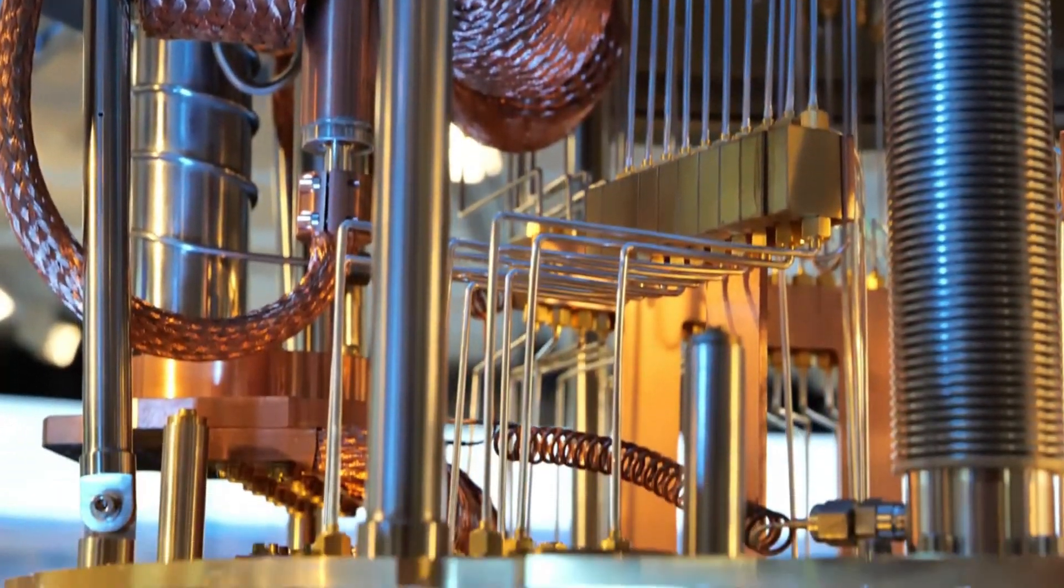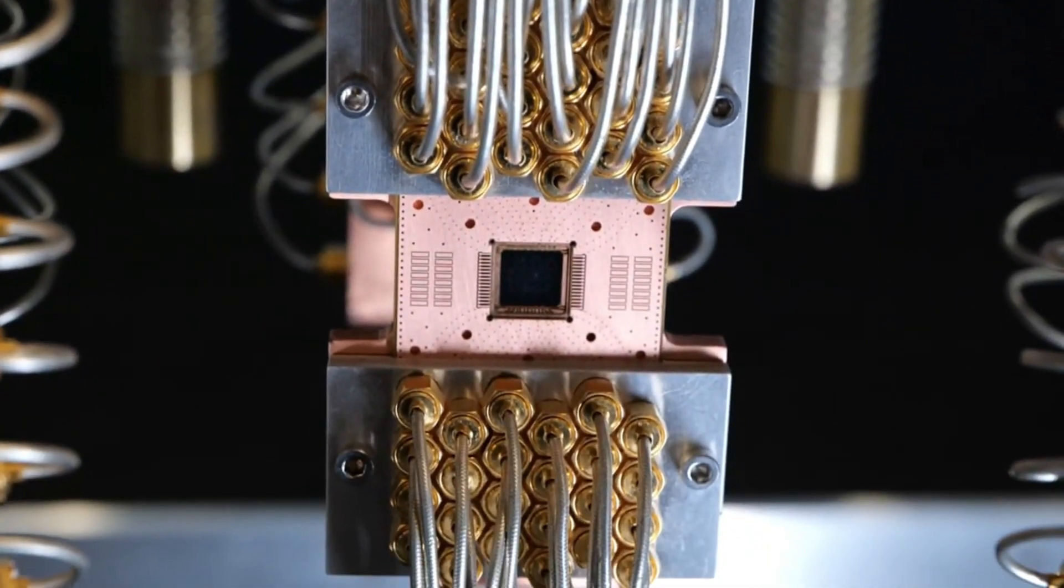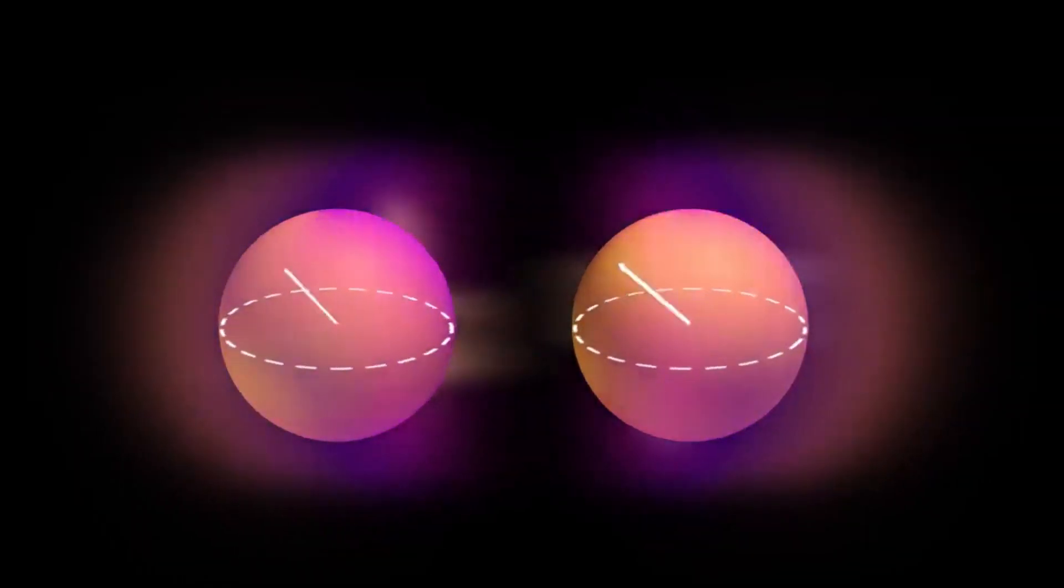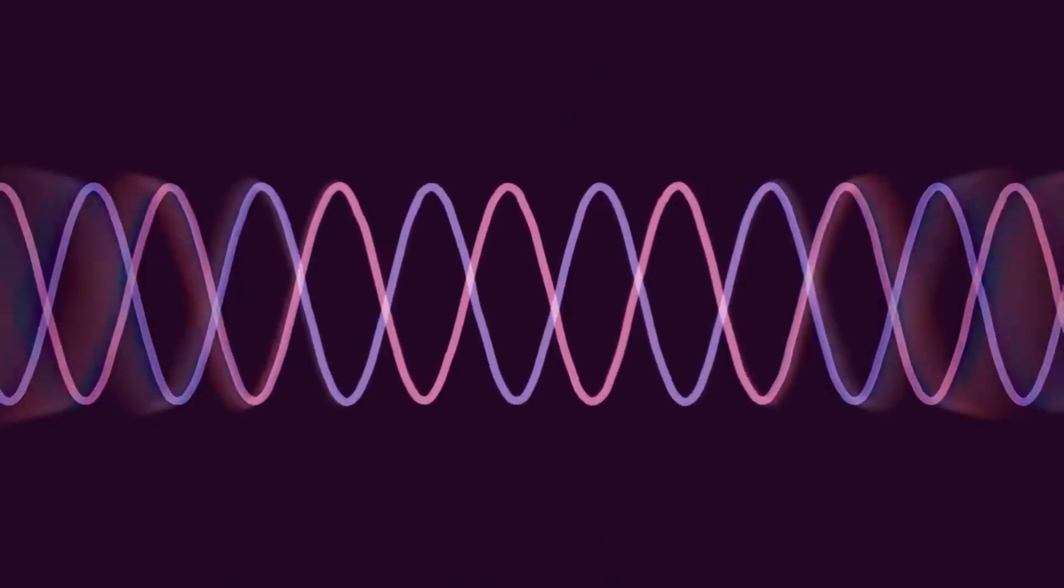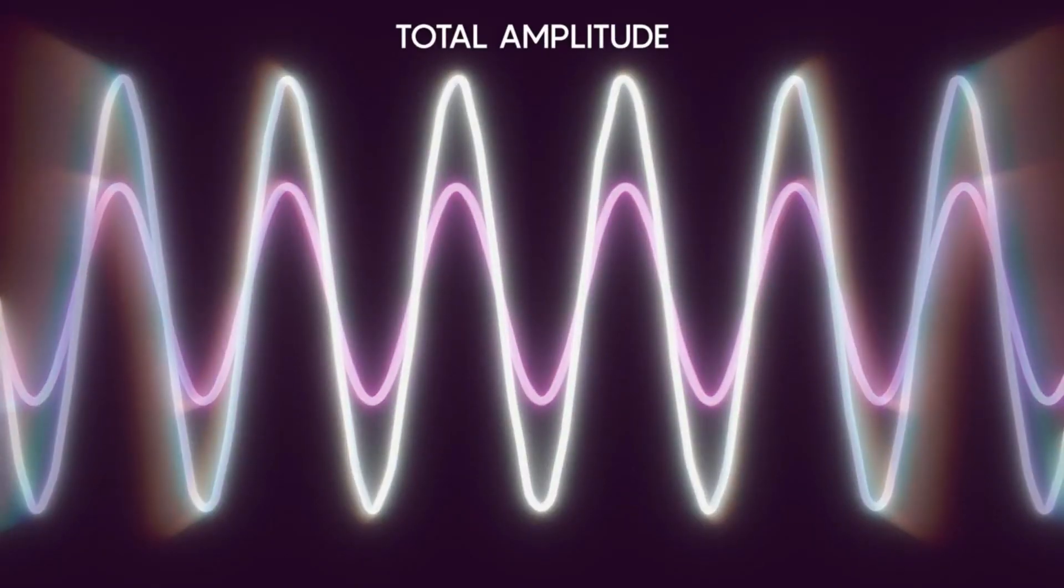But the magic of quantum computing doesn't stop at superposition. There's another astonishing concept known as quantum entanglement. In this mind-boggling state, two qubits become deeply linked, so that the state of one directly and instantaneously influences the state of the other, regardless of the distance between them.